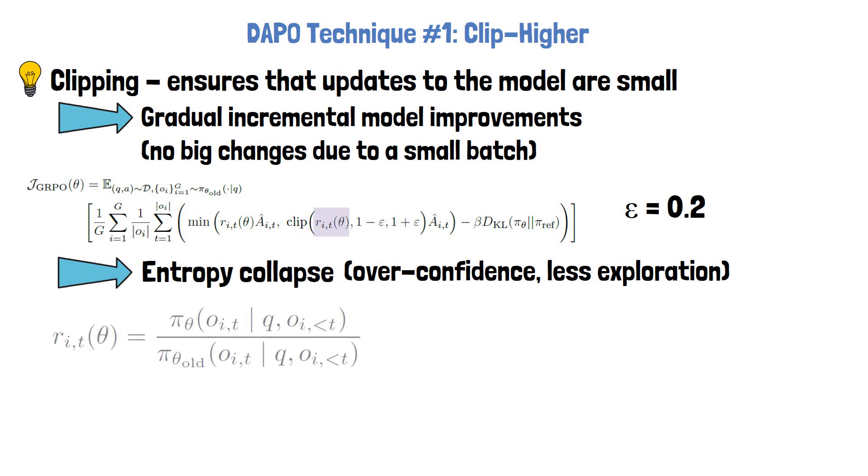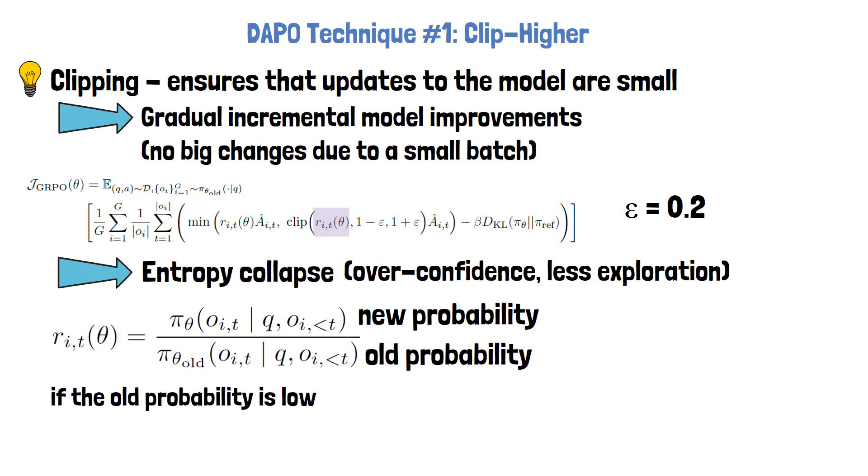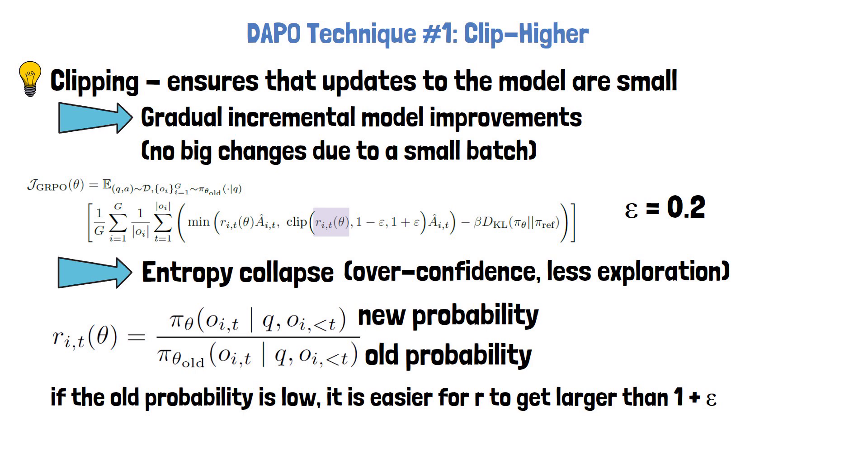As reviewed earlier, the policy ratio is defined with the existing response probability in the denominator and the new probability in the numerator. If a response has an existing low probability, then we divide by a lower number. So, updating the new probability to a value that passed the clipping boundary is more likely when the denominator is lower.